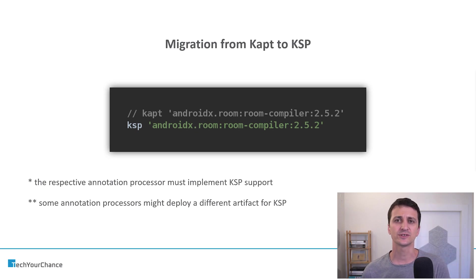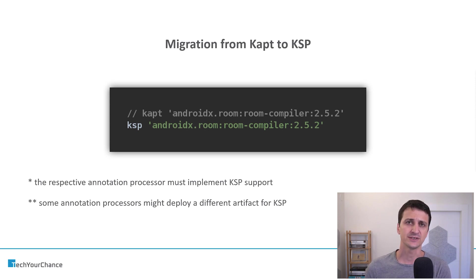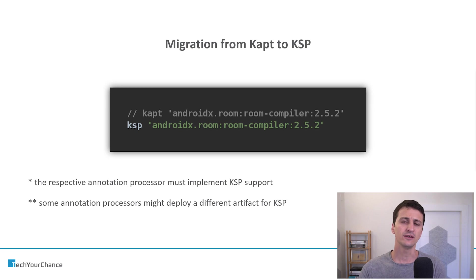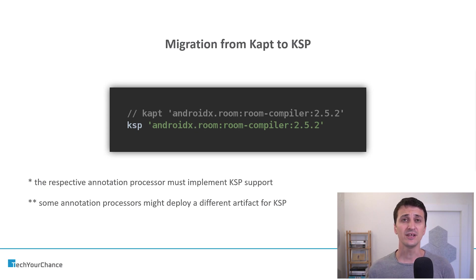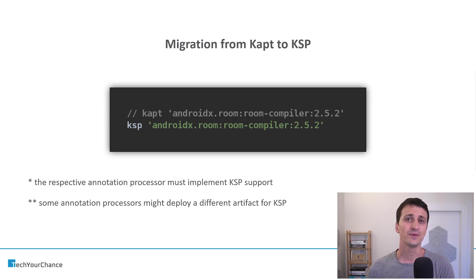That's pretty much it for this video. Now you understand that KSP, Kotlin Symbol Processing, is a replacement for annotation processors in Kotlin. You understand why it was developed by Google — to allow migrating annotation processors to Kotlin compiler plugin architecture quicker and easier. You understand why we wanted to do that in the first place, because Kapt is slow and does not understand Kotlin semantics. Migrating from Kapt to KSP is straightforward for users — you just need to check the documentation of the respective annotation processors. Thank you for watching, see you next time, goodbye.